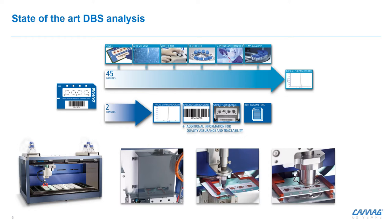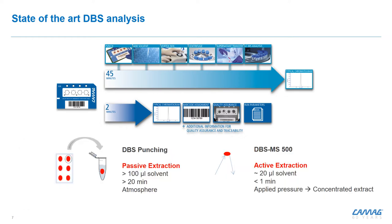We can load up to 500 DBS cards into the instrumentation, which are then handled in a fully automated fashion. The main difference between punching and this direct elution is that we have activated extraction — always fresh solvent hitting the sample — and we end up with only about 20 microliters of a very concentrated extract within less than a minute per sample.